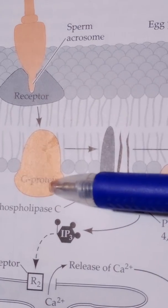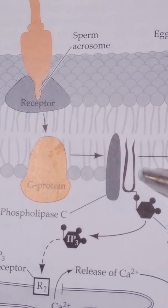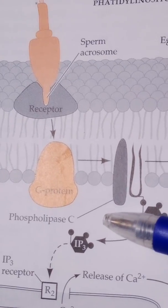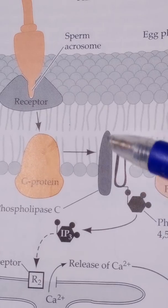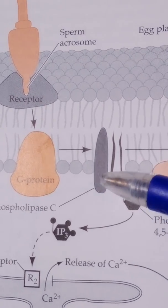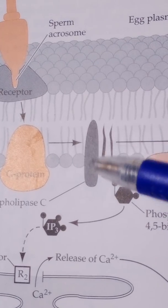This is the G protein. And the activation of the G protein causes the phospholipase C activation. This is phospholipase C. As it is activated, it causes what?